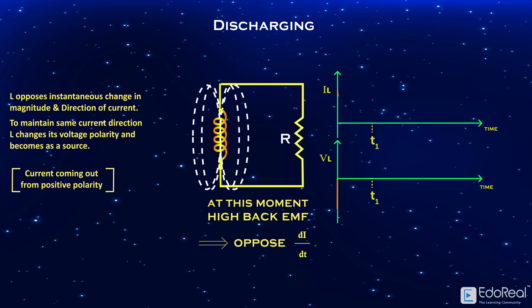So the current decays in an exponential manner towards zero, and the induced voltage also becomes zero. That is, the inductor is completely discharged.